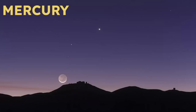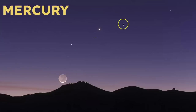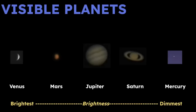When observing planets in the sky, they look different from stars — they're often brighter and can appear disc-like rather than a point of light, especially when close. The planets visible from Earth are Venus, Mars, Jupiter, Saturn, and Mercury. Keep in mind that their brightness can change over time. I have a whole video about the motion of the planets if you want to learn more.